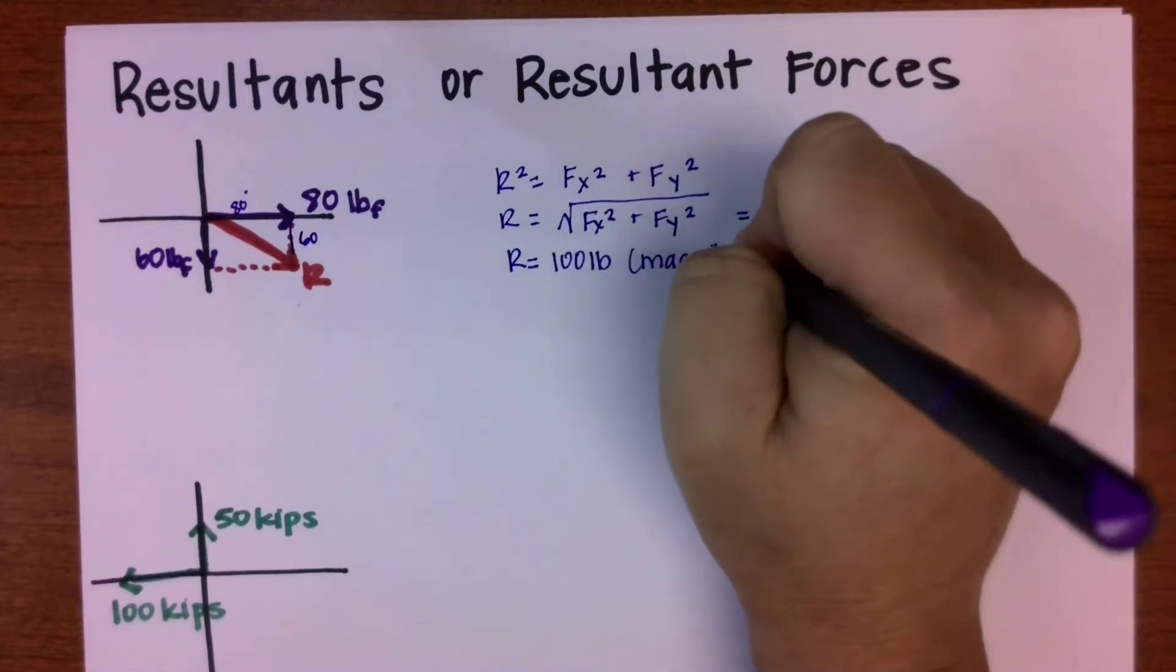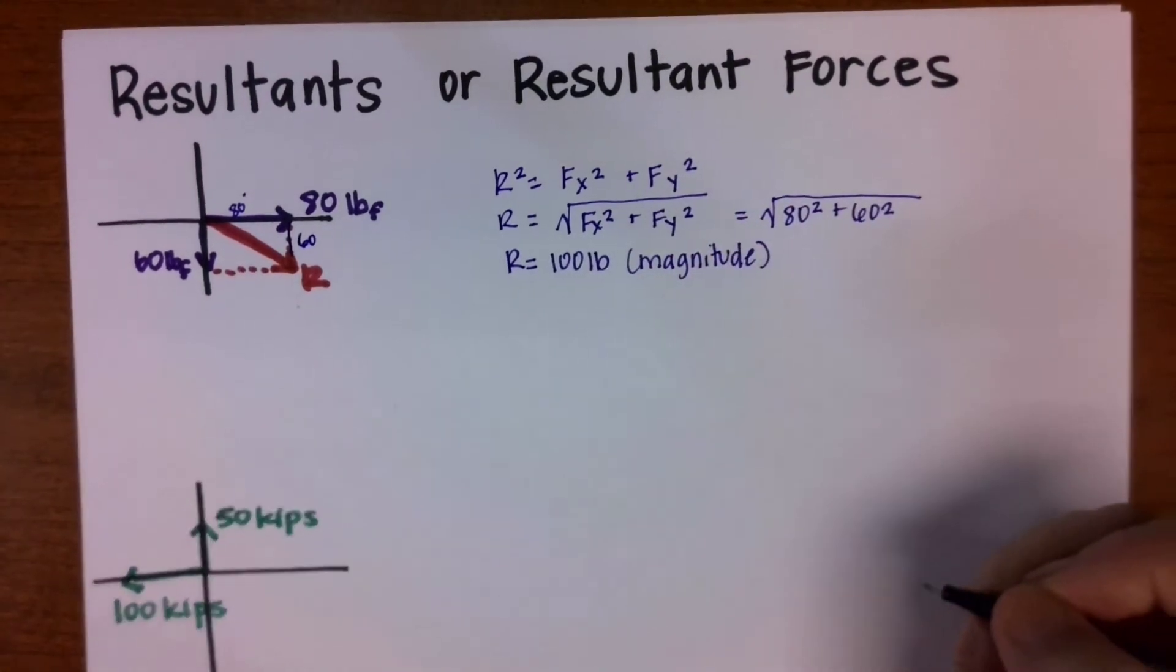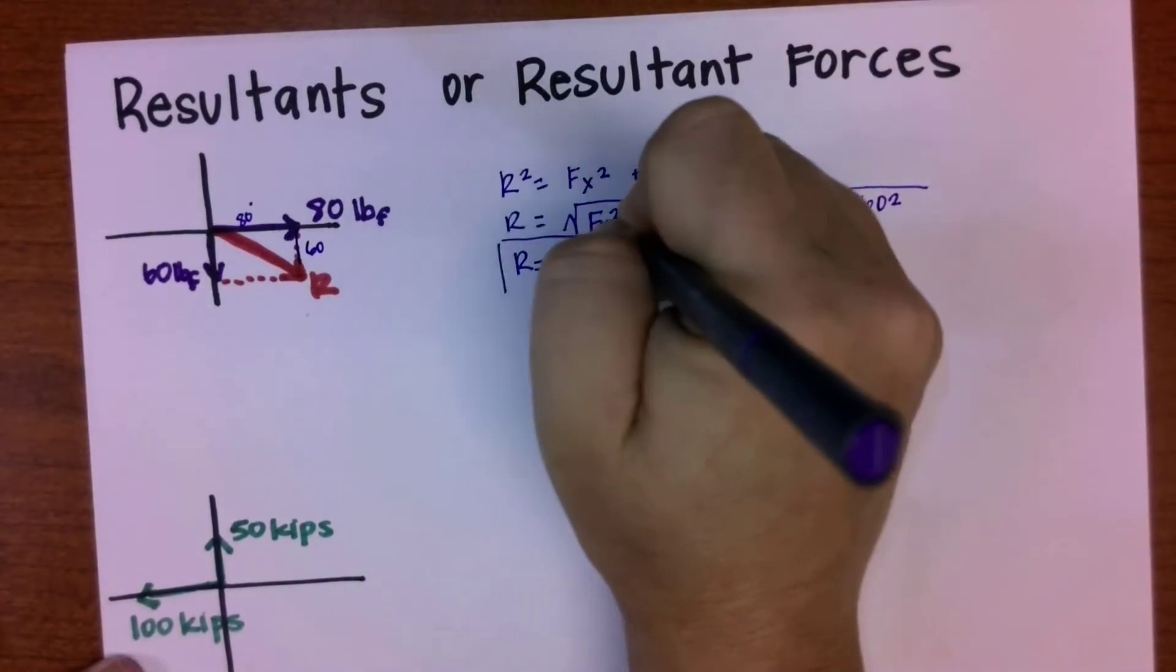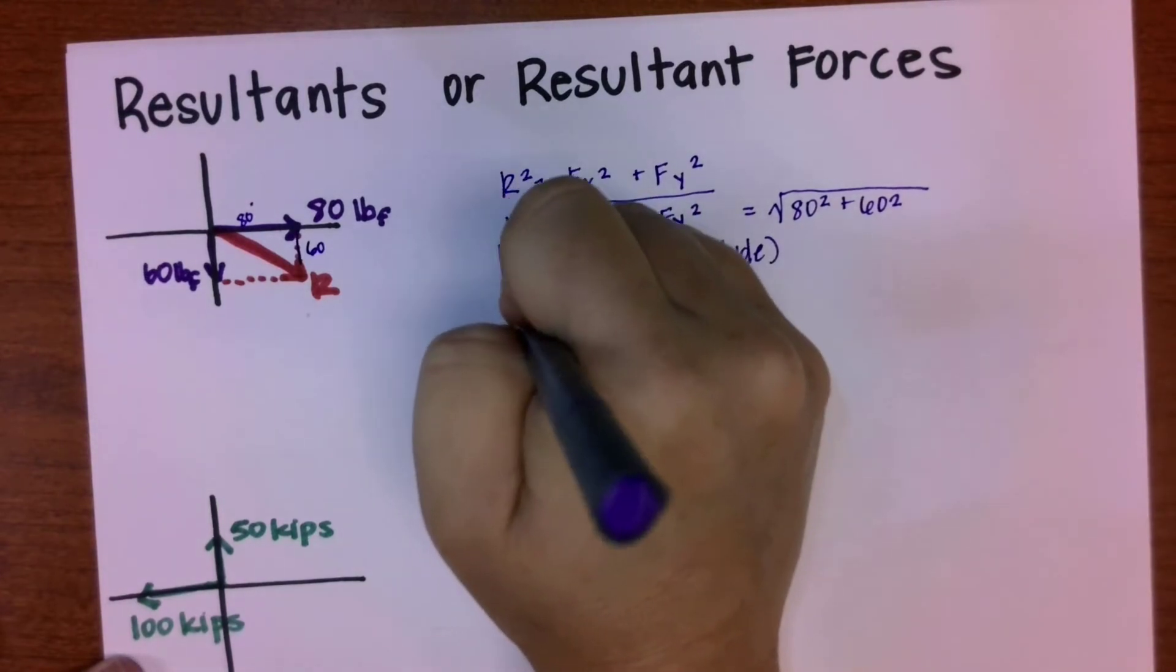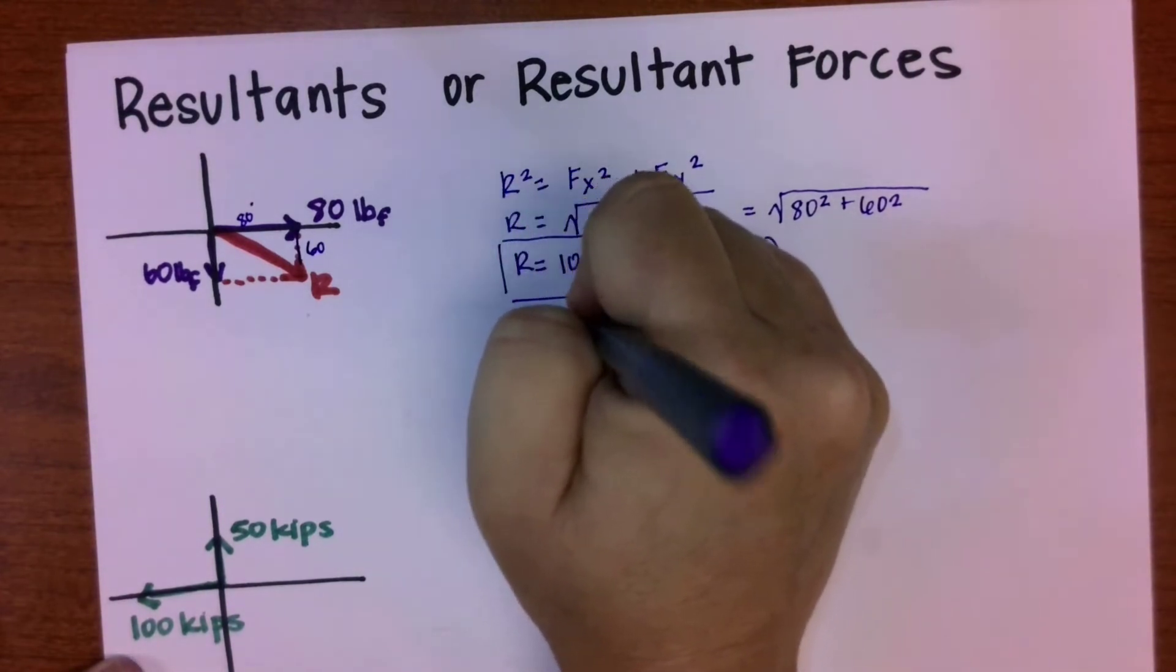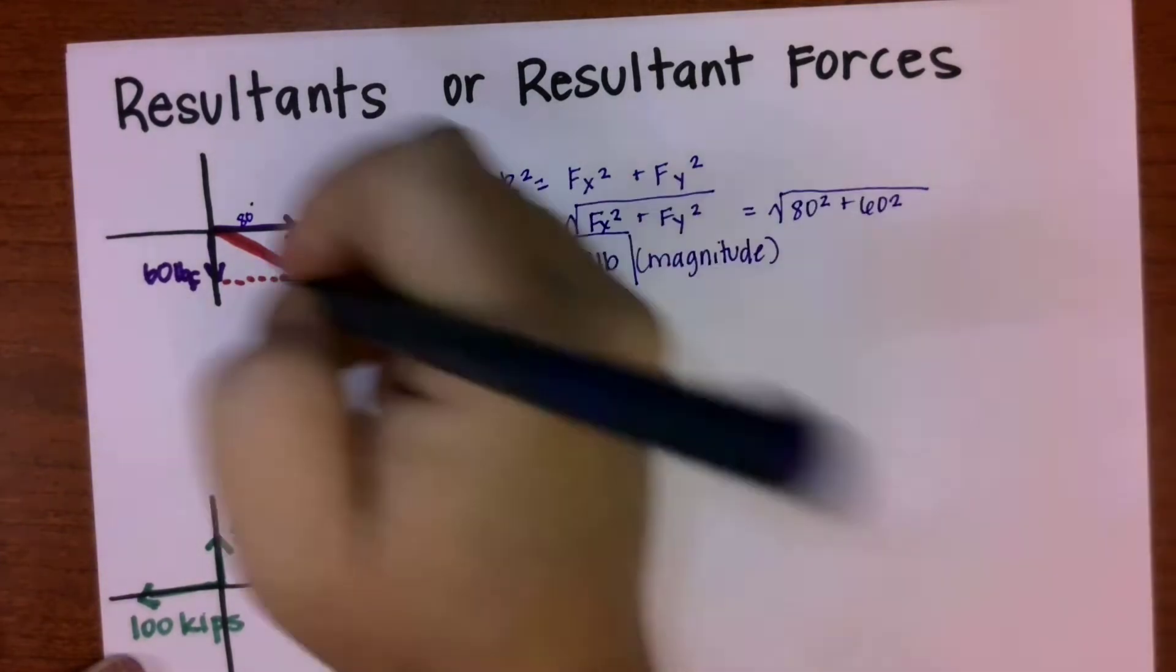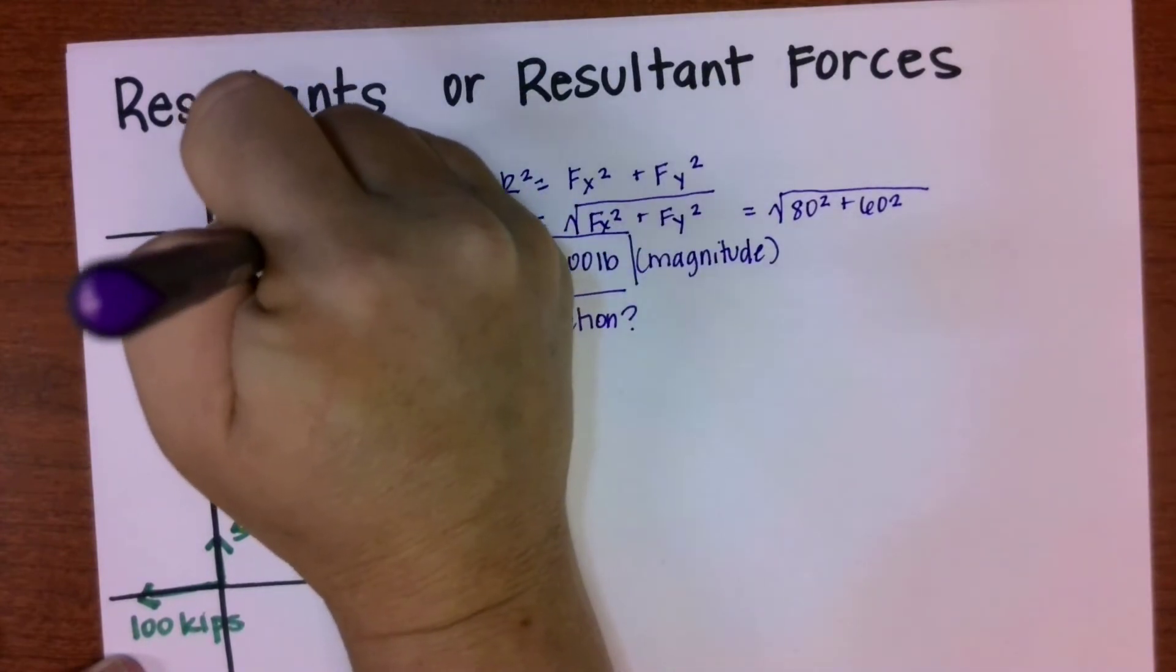Remember that forces have a magnitude and a direction, so I need to actually define that angle. To do that, I'm going to use right triangle trig to determine the direction. I've got the angle with the x-axis there.